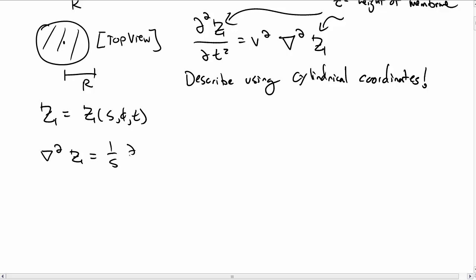The Laplacian in cylindrical coordinates is, for s derivatives, and then in the phi direction, you have a second derivative with respect to phi, and then a 1 over s squared. This is pretty ugly, so let's make a simplification.